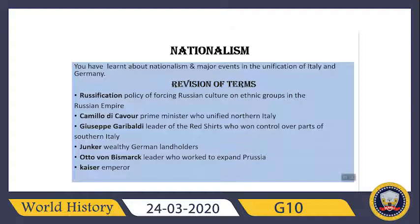Junker — wealthy German landholders. Otto von Bismarck — a leader who worked to expand Prussia. And at the end we have Kaiser — he was an emperor.